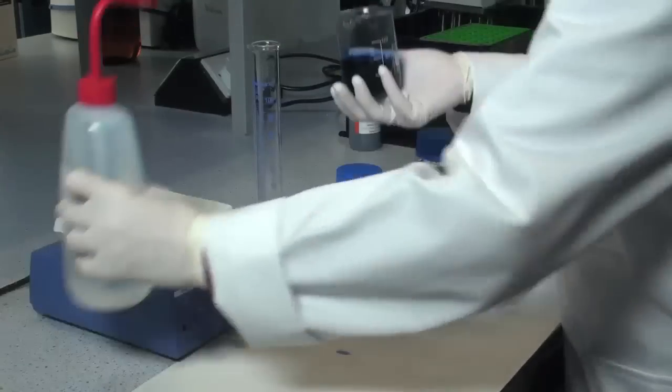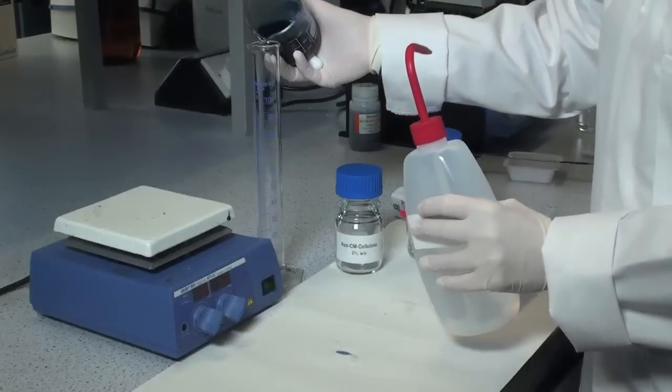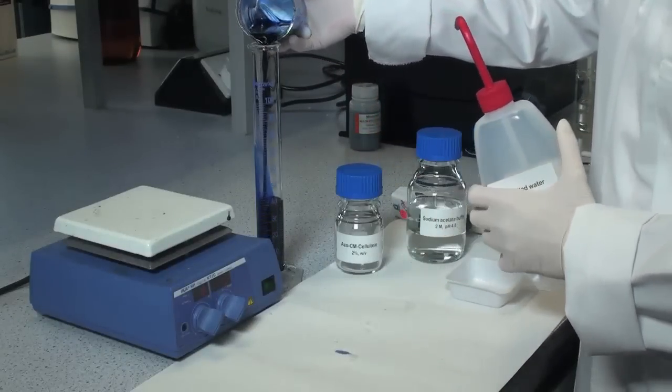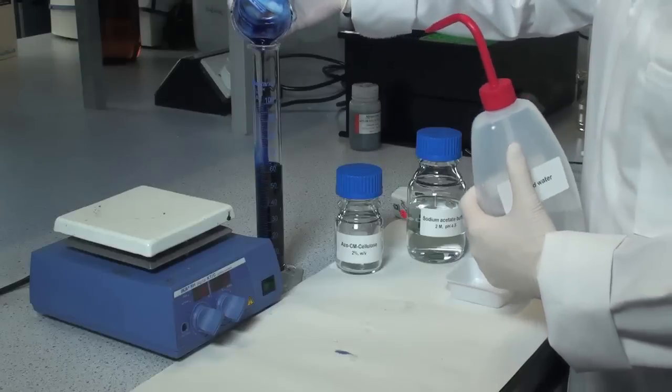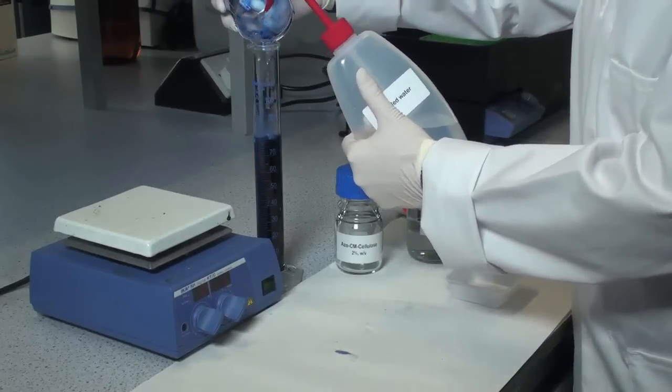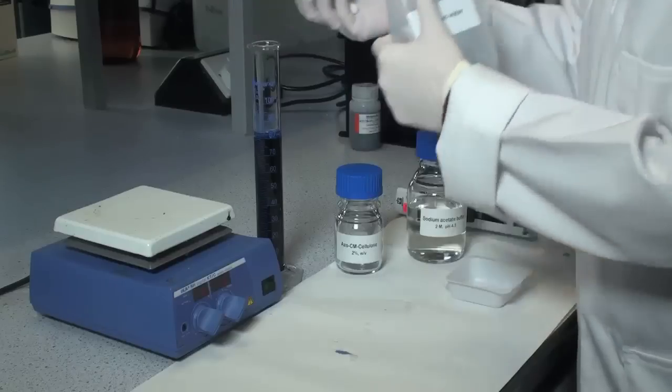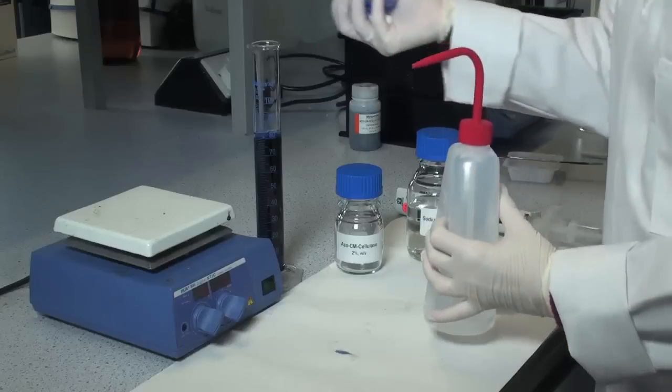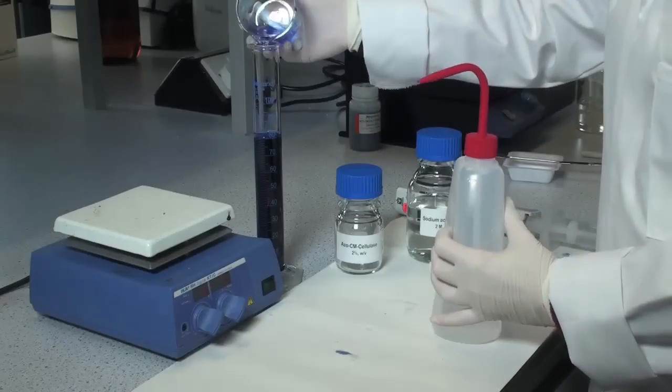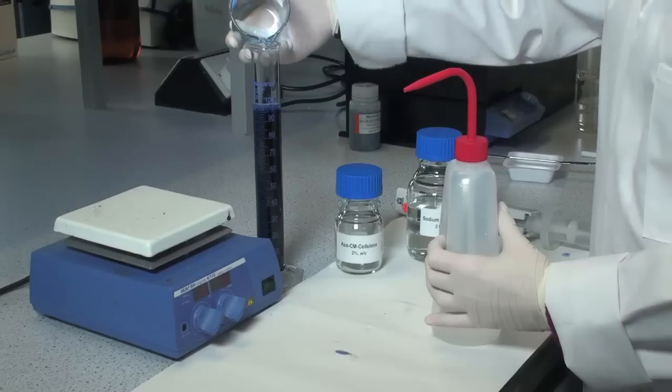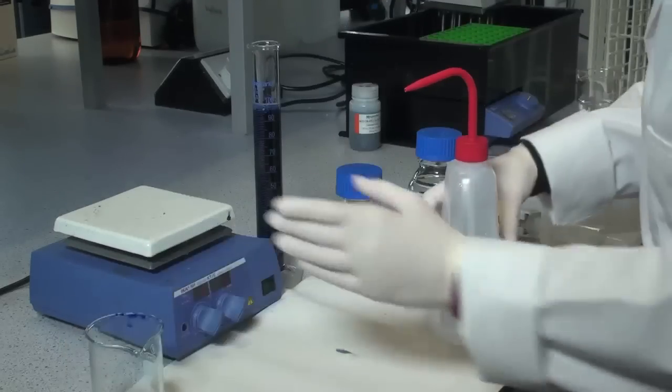Then adjust the volume to 100 ml by transferring the substrate to a 100 ml measuring cylinder, rinsing out the beaker to get the remainder of the substrate, and then adjusting the volume to 100 ml with deionized water.